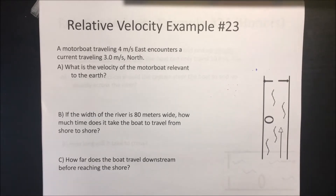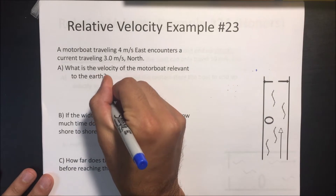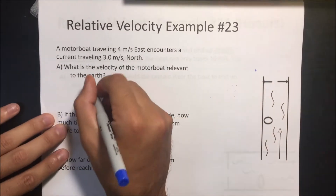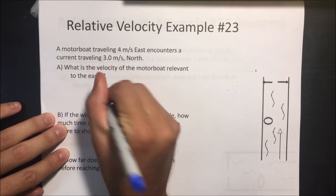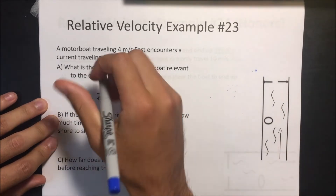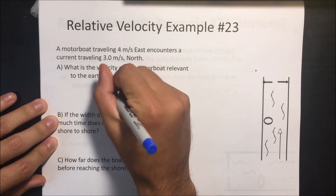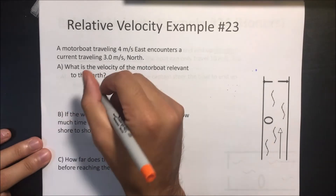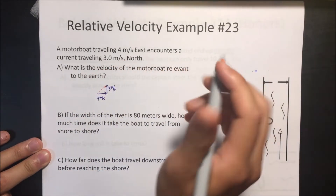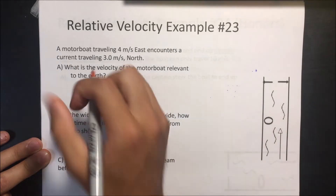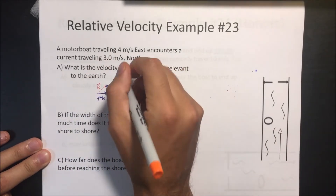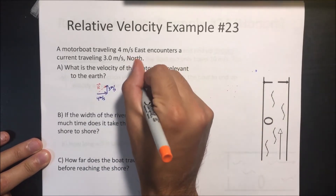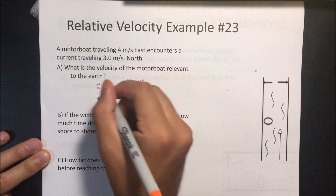This one isn't too bad. We have the motorboat trying to go East at 4 meters per second, and the current is pushing it North at 3 meters per second. Since we're looking for how fast it's going with the current, we find the resultant vector. We know this is a 3-4-5 triangle, so it's going 5 meters per second.